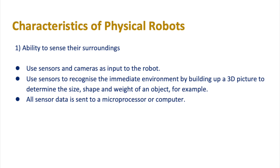Let's start with the first characteristic: the ability to sense surroundings. Robots use sensors and cameras as input. These sensors recognize the immediate environment and build up a three-dimensional picture to determine the size, shape and weight of perhaps an object. The robot can then interact with that particular object.